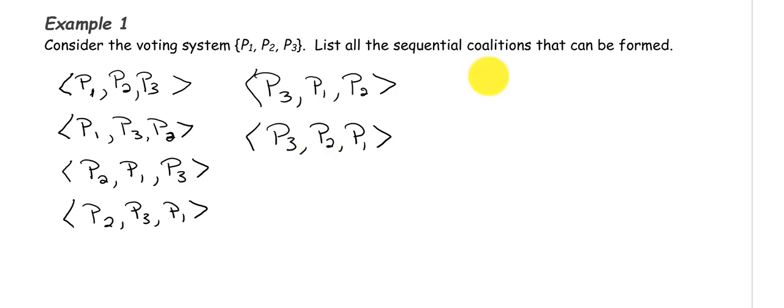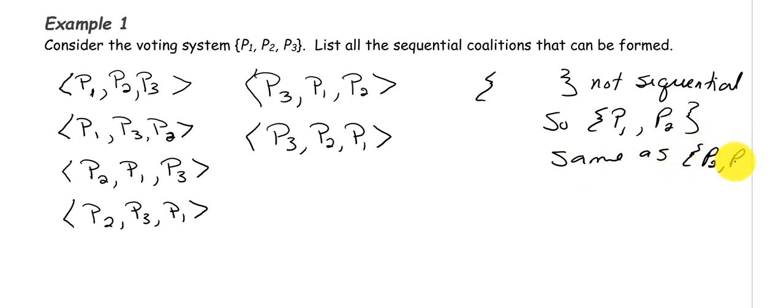Couple of things to remember when you see the squiggly brackets. I'm not very good at drawing them, but when you see those, this is not sequential. If you had player one comma player two, and you have the squiggly brackets, this is the same as having player two, player one. Here order does not matter.